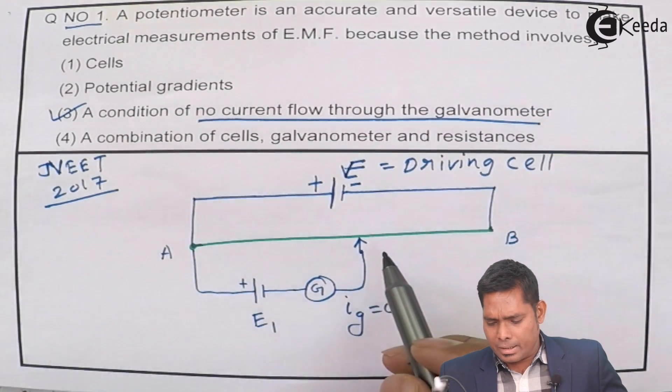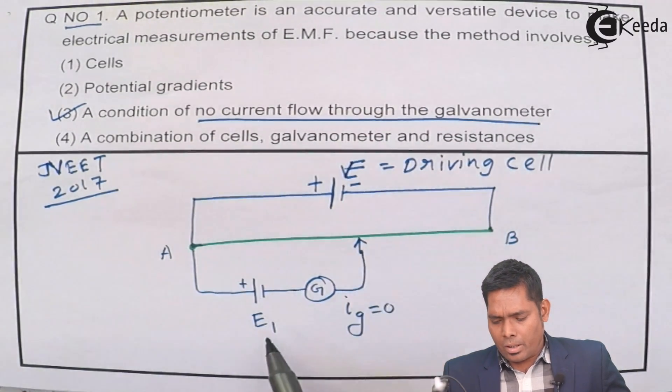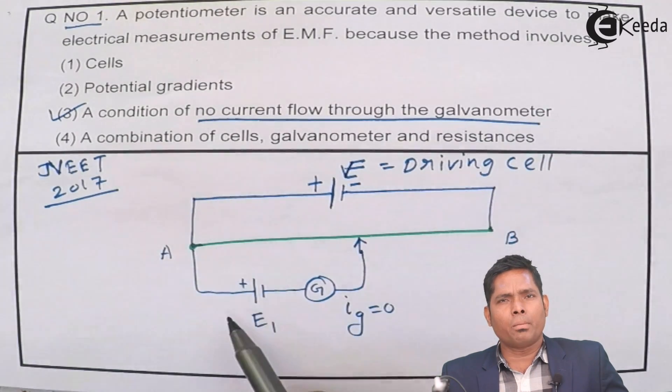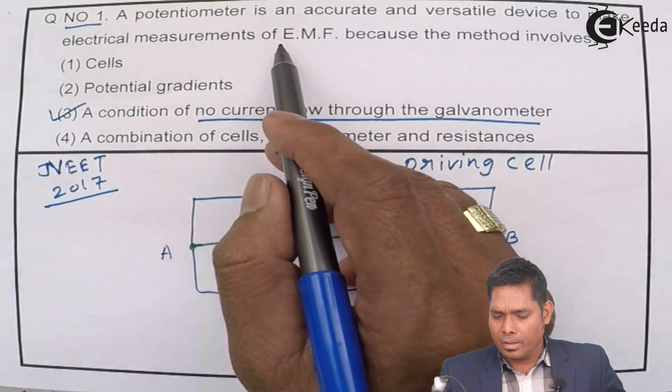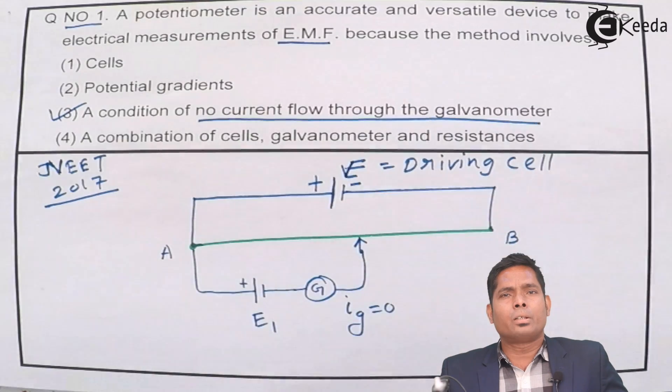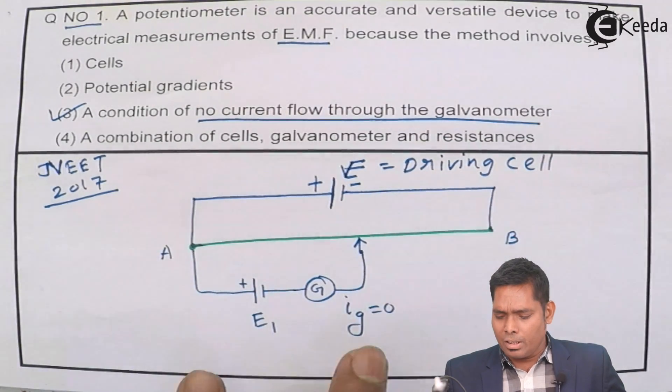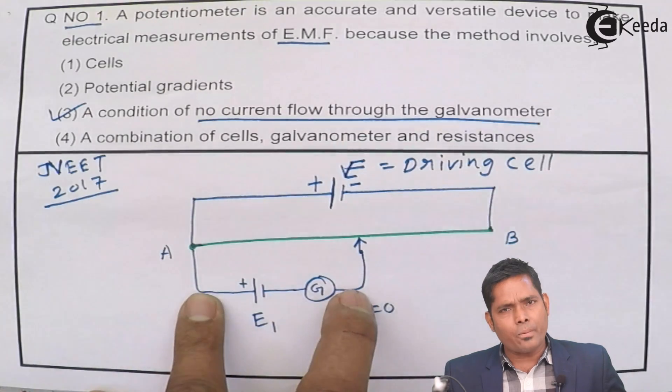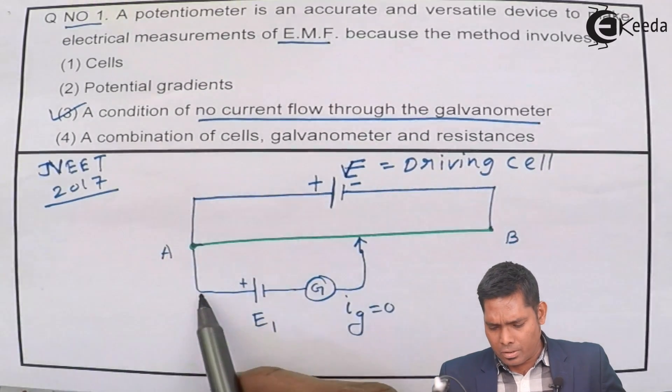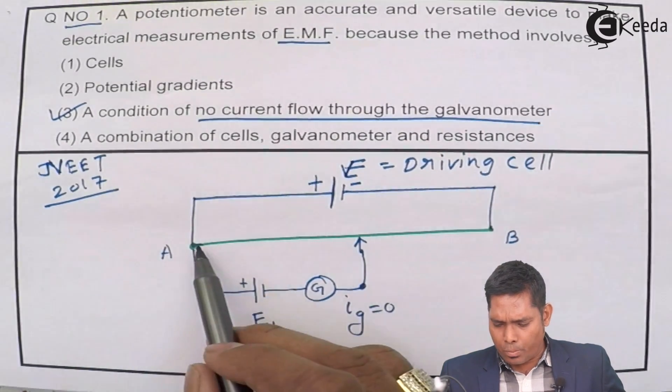Basically what is happening is that EMF of basic definition of EMF is that because we want to measure electrical EMF. The basic definition of EMF is that when the potential difference across the cell. Suppose these two points no problem or these two points.